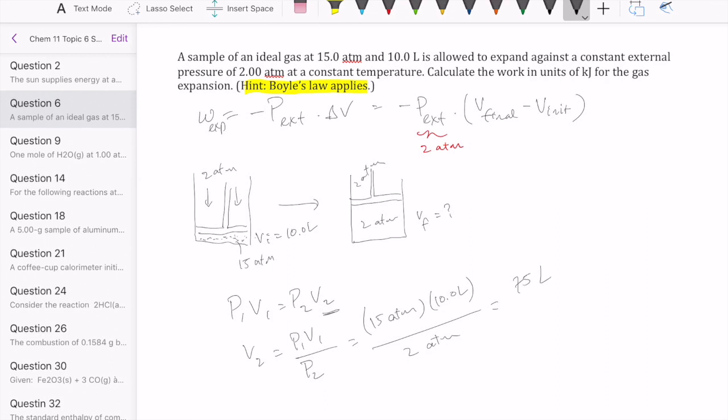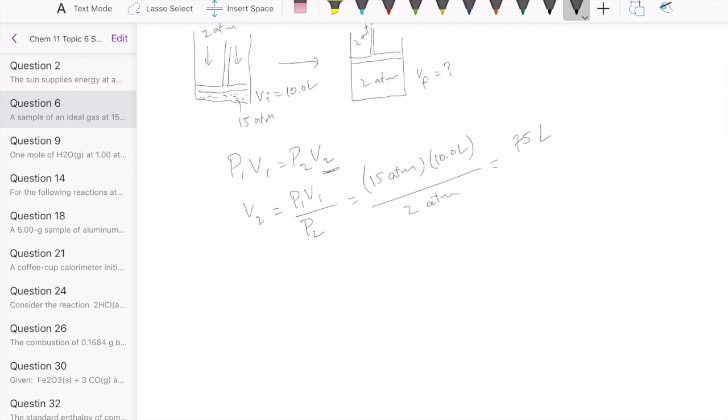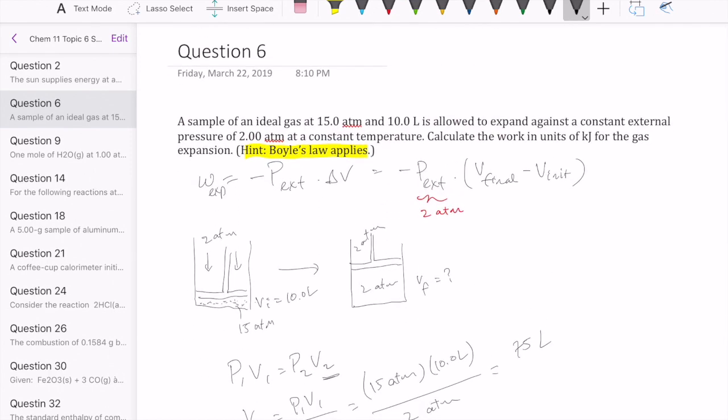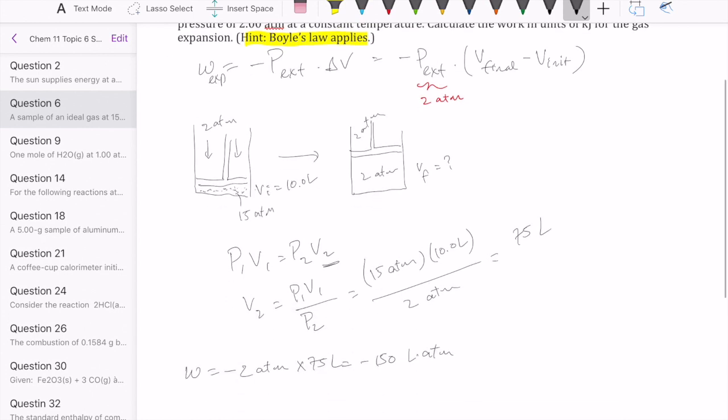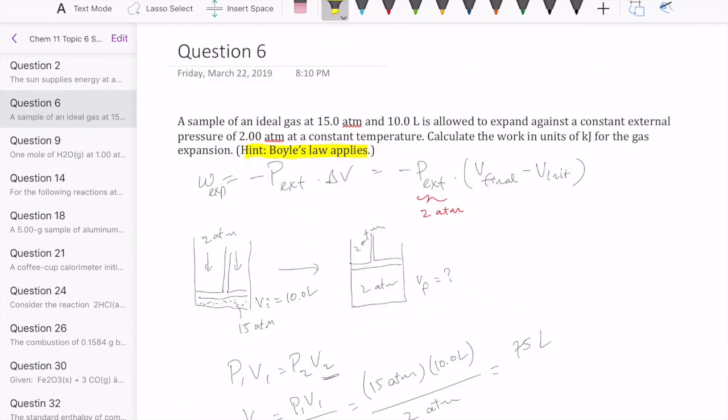Now once you have 75 liters, you can go ahead and calculate your work. That's going to be negative P external, which is 2 atmospheres, times 75 liters. That gives you negative 150 liter-atmospheres. But as you can see, when you do it that way, it doesn't give you units of work that are useful or familiar. In fact, the question says calculate the work in units of kilojoules.